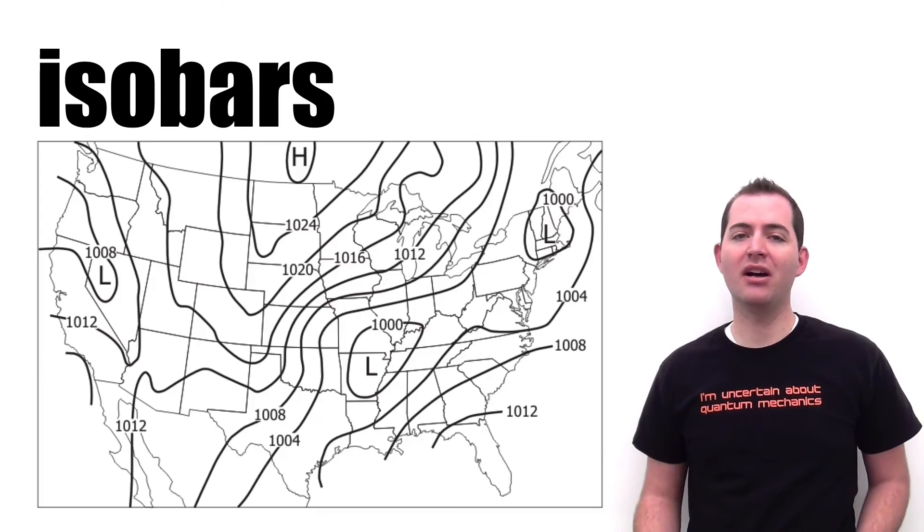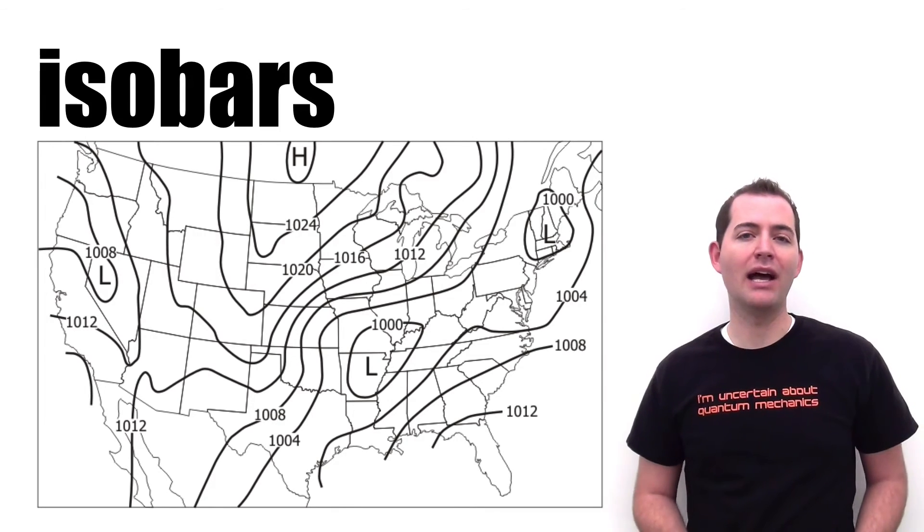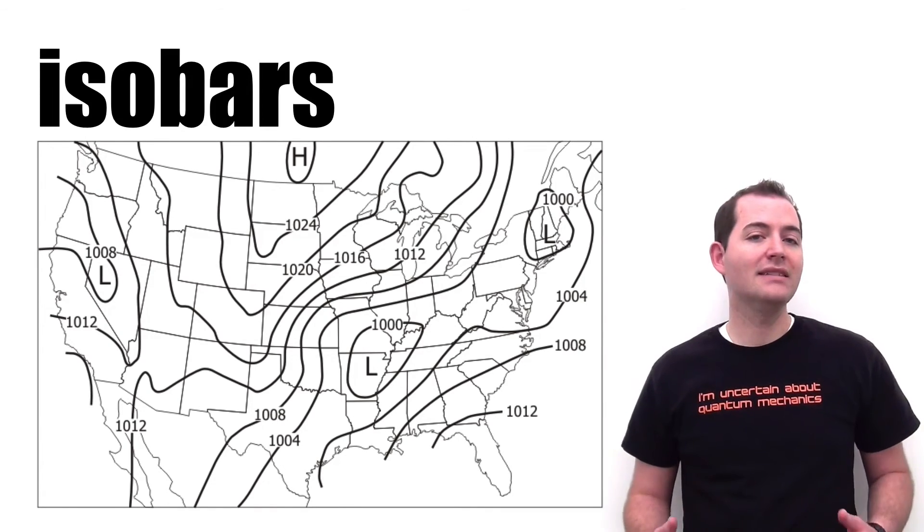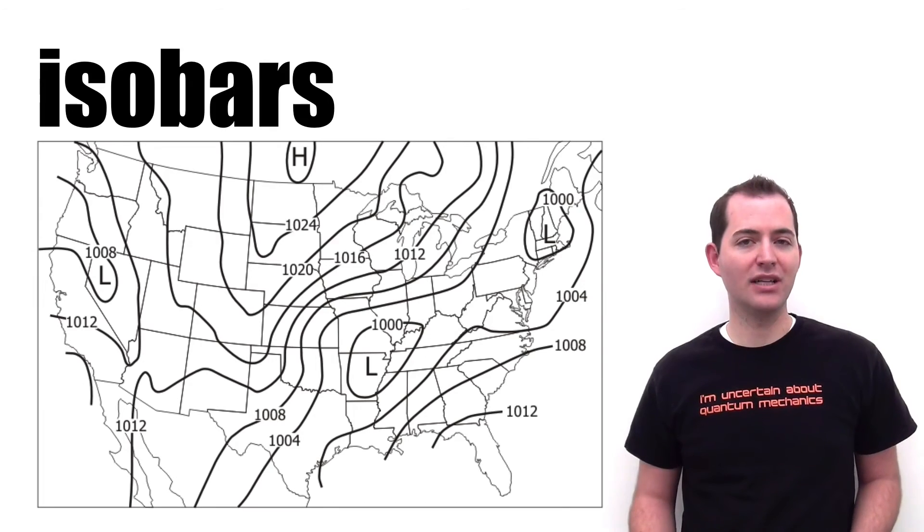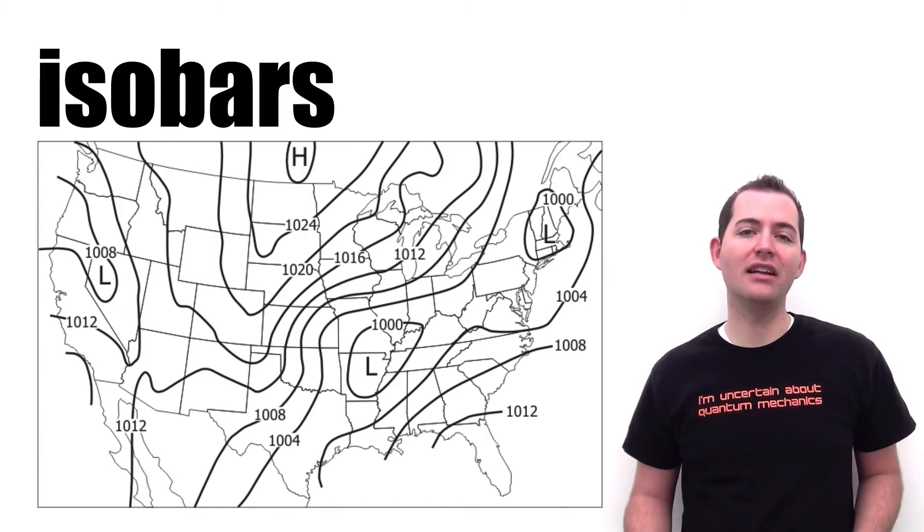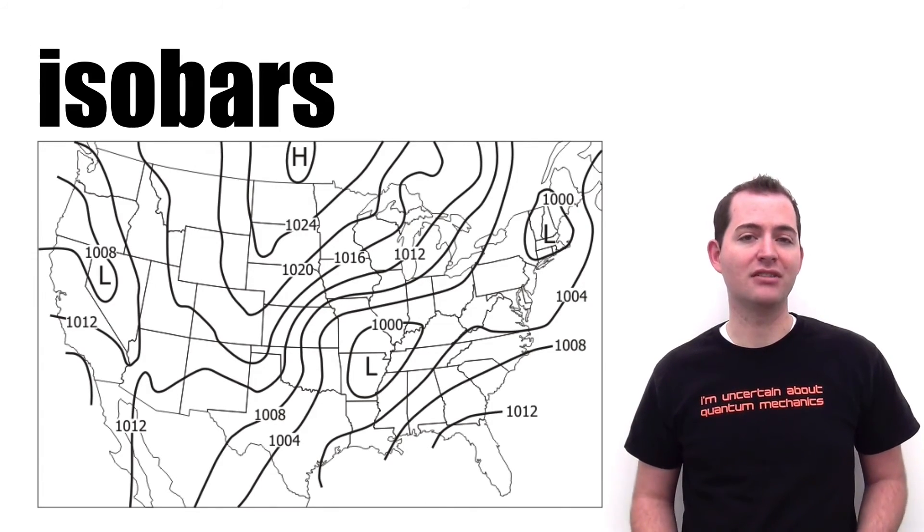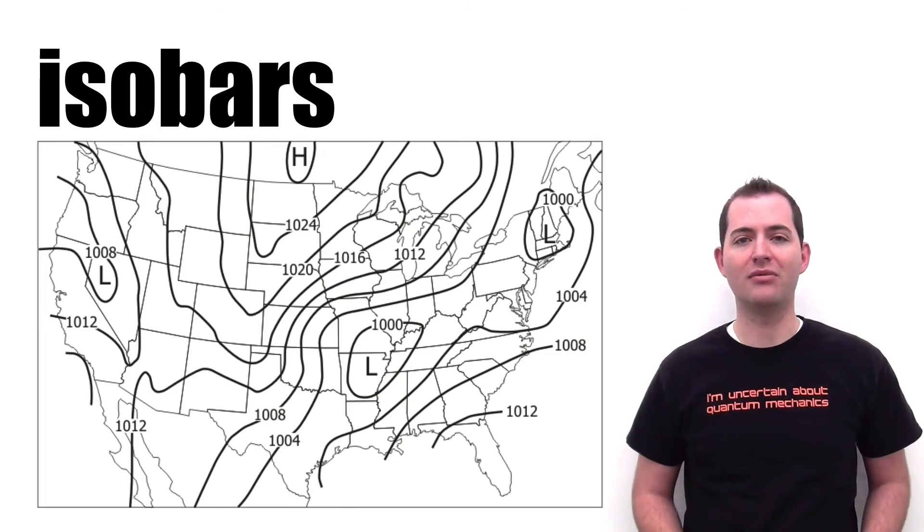Differences in air pressure can be mapped using what are called isobars, and isobars connect areas of equal atmospheric pressure. When these atmospheric pressures are mapped using isobars, we can often see areas known as ridges, which are elongated areas of relatively high air pressures, and we can also see troughs, which are elongated areas of relatively low air pressure.